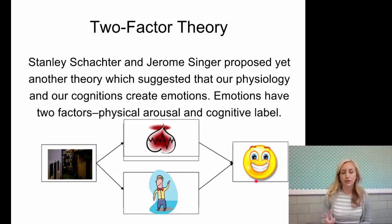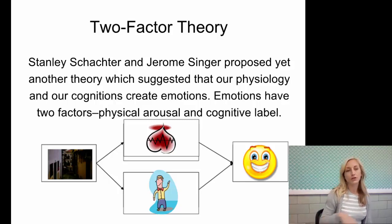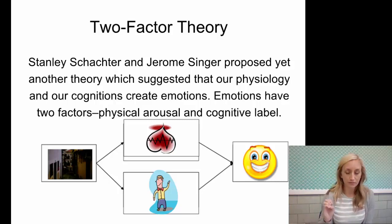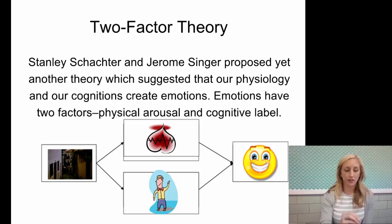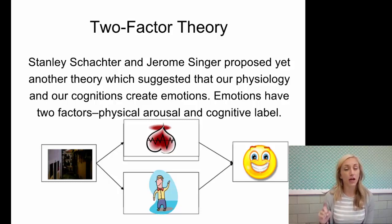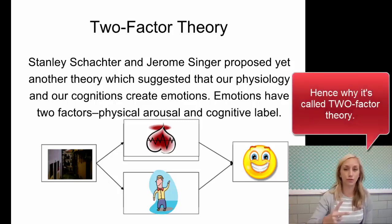Our next theory is the two-factor theory — also called the Schachter-Singer theory. You need to know their last names as well as the name 'two-factor.' With Cannon-Bard and James-Lange, it was just the physiological response that had something to do with emotion. Schachter-Singer said there's something else — another factor in addition to the physiological response — making it two-factor.